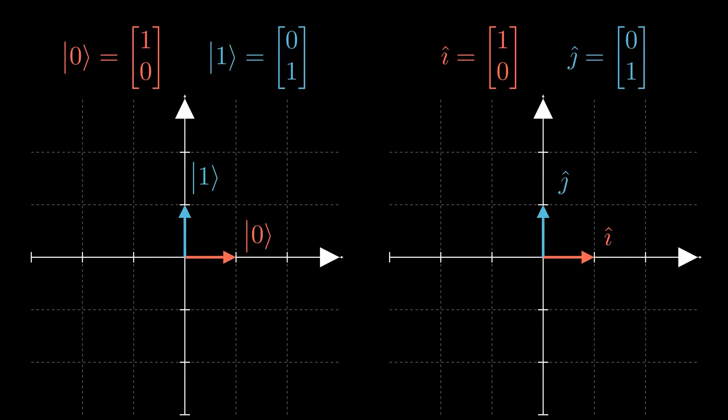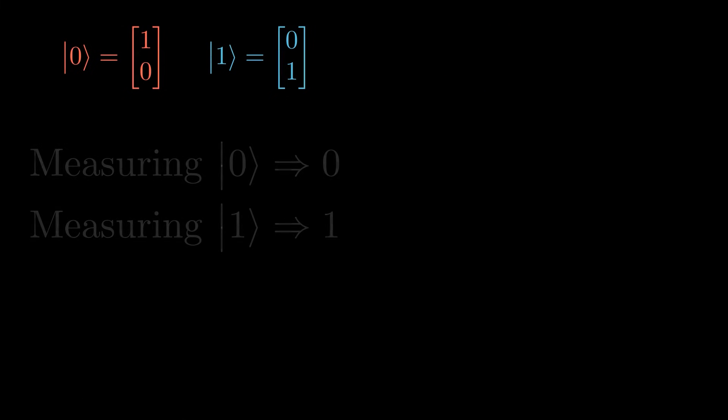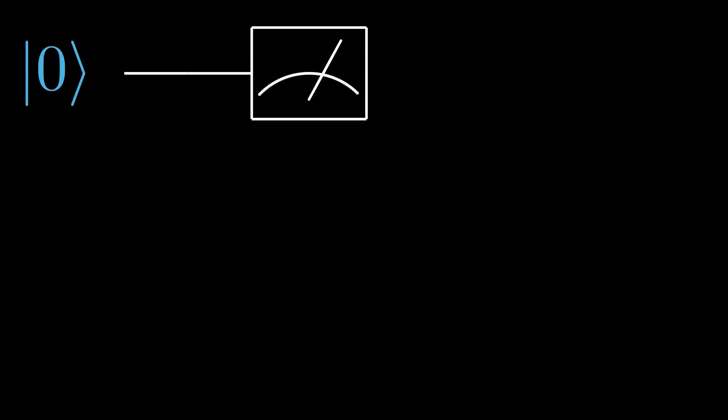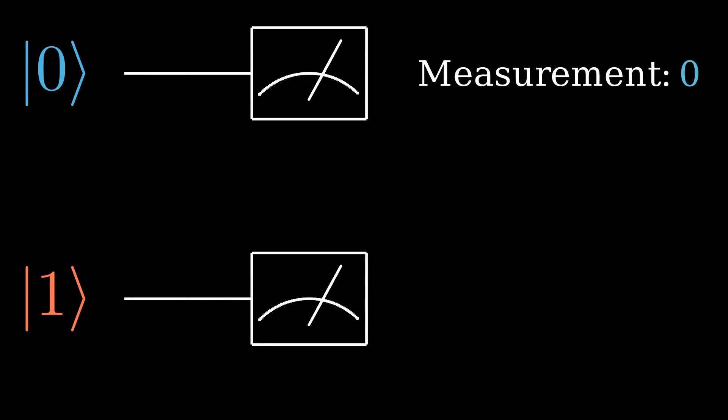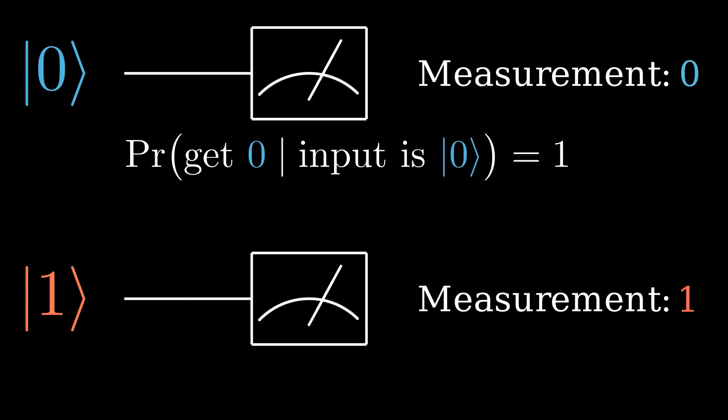Well, one thing that we can do with qubits is measure them. So let's move our qubit along a wire and measure it at the end. If we measure a 0 ket, the result will always be a 0. Likewise, measuring a 1 ket will always result in a 1. In terms of probability, we can think of this as the probability of getting a 0 given a 0 ket is 1. The probability of getting a 1 given a 1 ket is also 1.